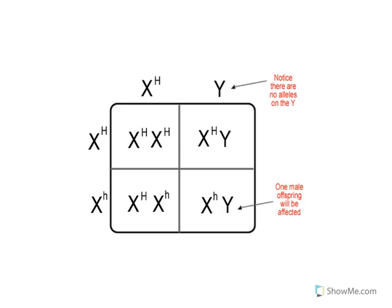Here is an example of a cross where the father is normal and the mother is a carrier. Notice there is no allele on the Y chromosome because the Y chromosome, being shorter, is not going to have an allele on it. When you do the cross and calculate genotypic and phenotypic ratios in sex-linked traits, look at the girls and the boys separately — don't look at them all together.